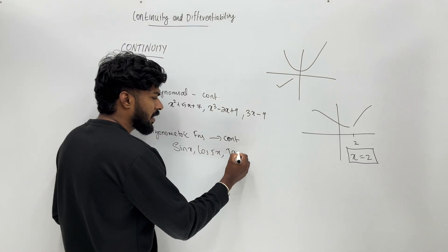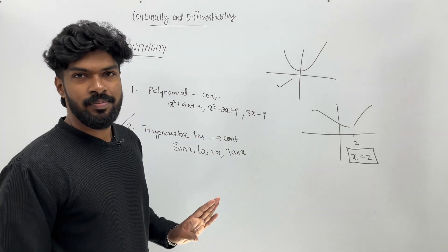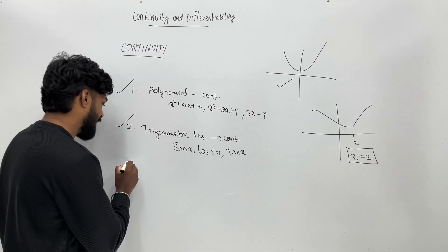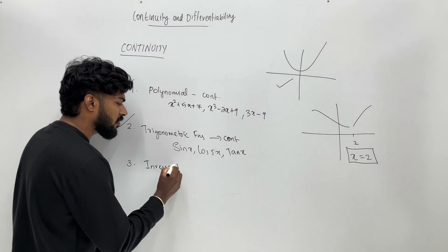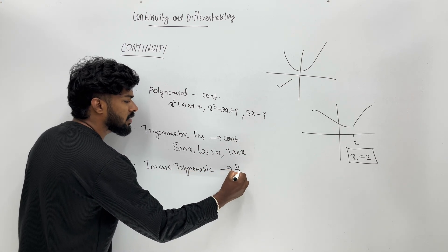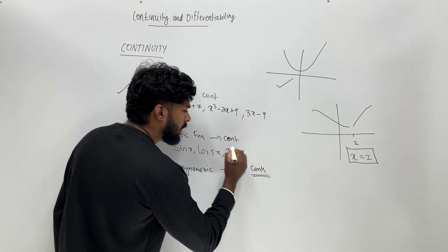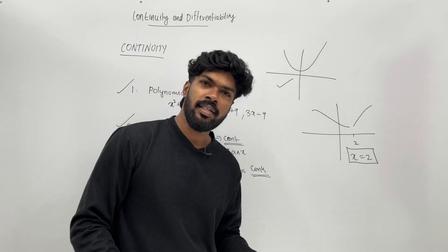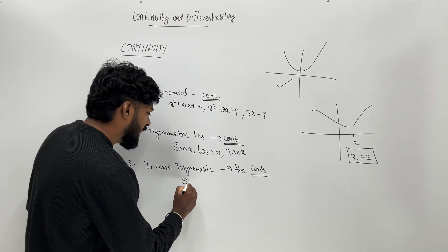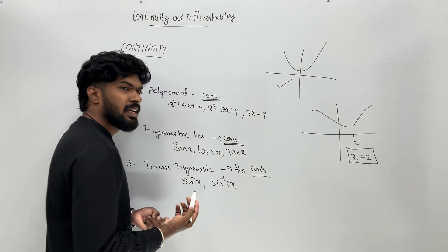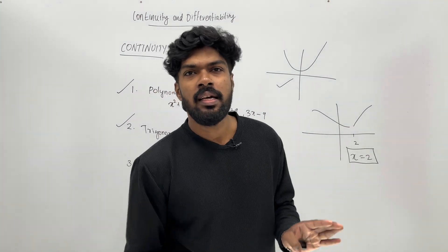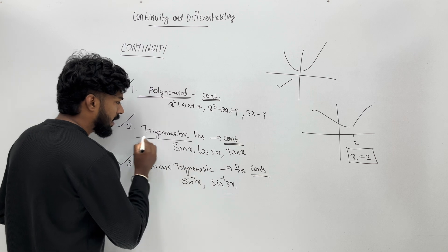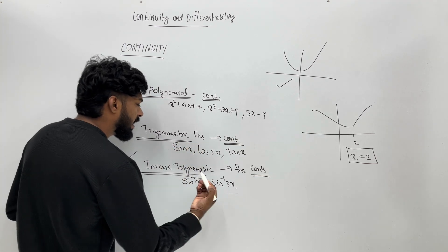All trigonometric functions are continuous over their domain. Also, all inverse trigonometric functions are continuous — for example, inverse cos, inverse sin, and so on. Polynomial functions are also continuous.